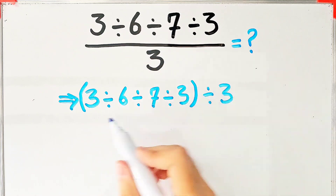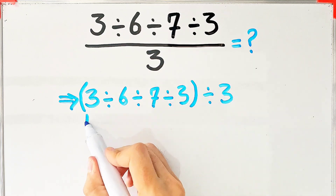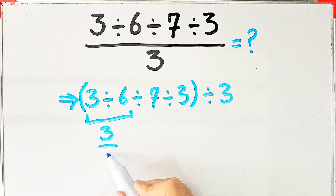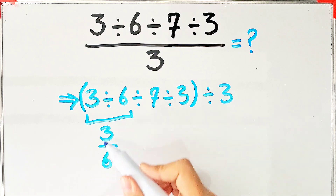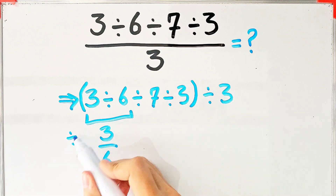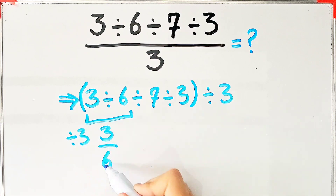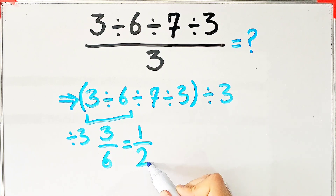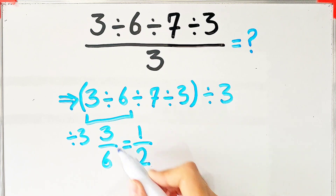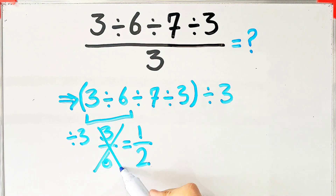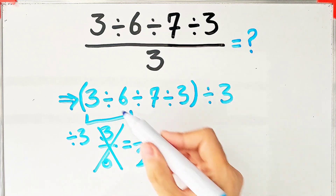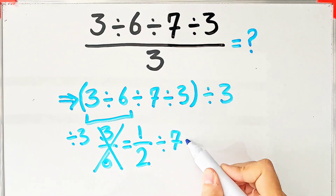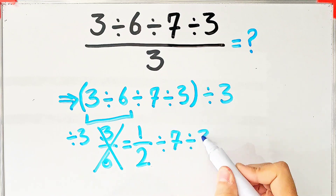First, we simplify the parentheses. 3 divided by 6 equals 3 over 6, and because the numerator and the denominator of this fraction are divisible by 3, we divide both by 3. We have 1 over 2, then divided by 7, then divided by 3, after that divided by 3.